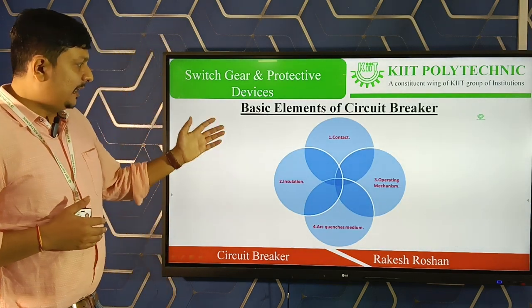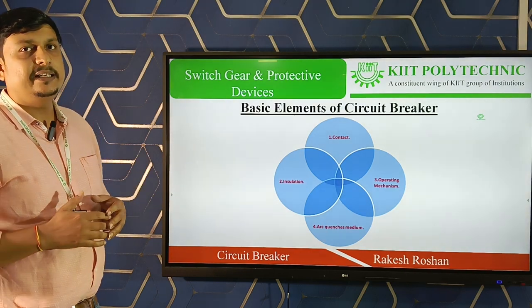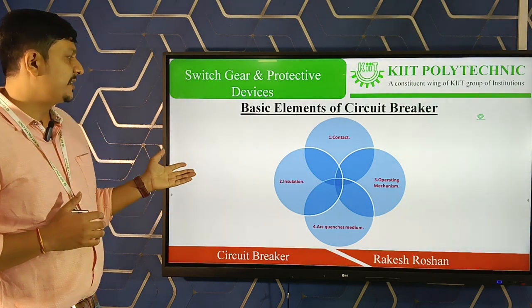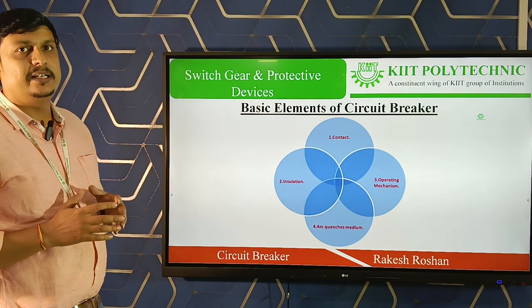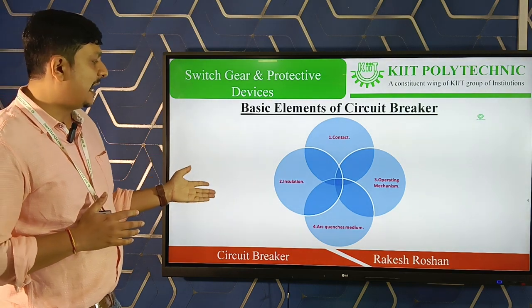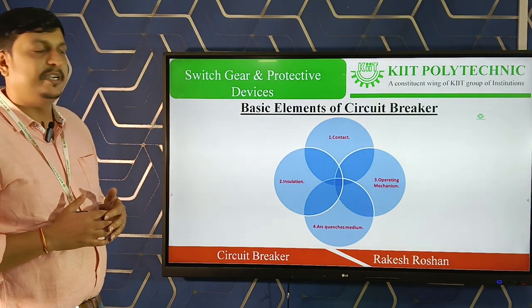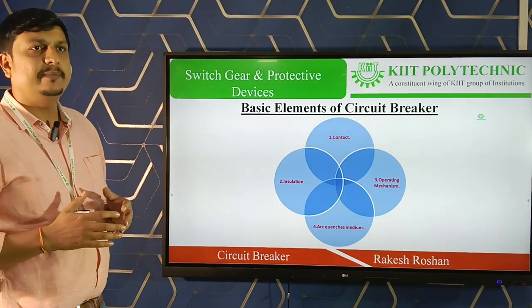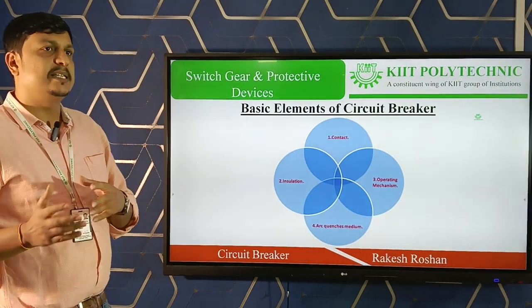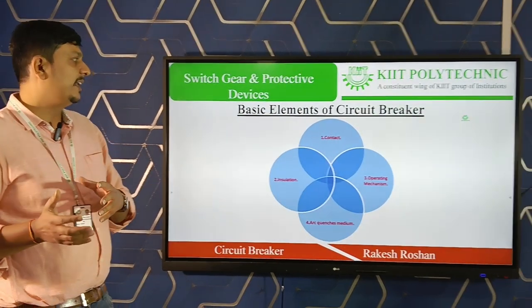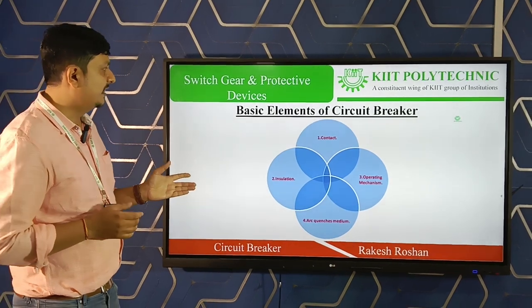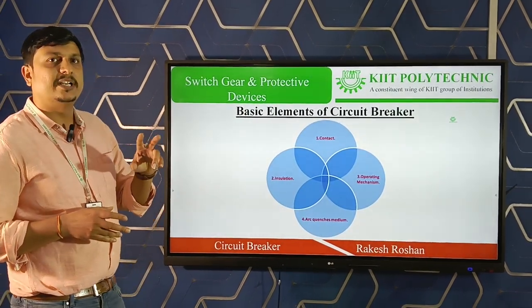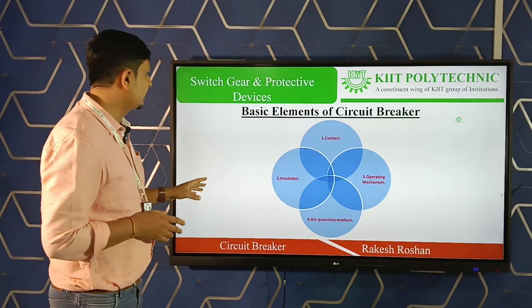There are four basic components in any circuit breaker: insulation, arc quenching medium, operating mechanism (which includes a spring and kinetic mechanism), and contacts — both fixed and moving contacts.